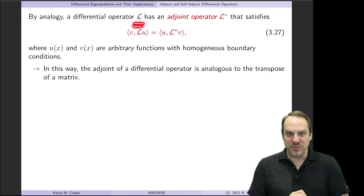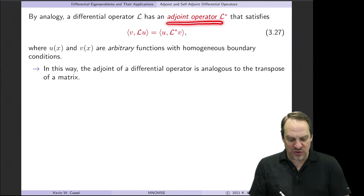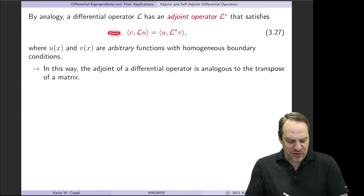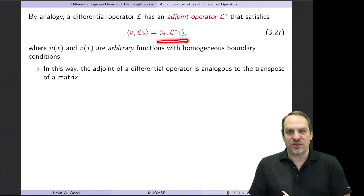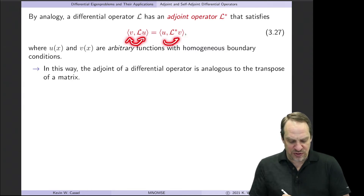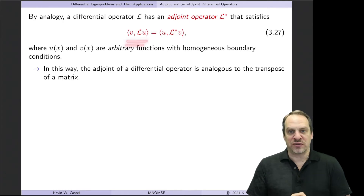By analogy, we define the adjoint operator L* for a differential operator L such that the inner product of v with L·u equals the inner product of u with L*·v. On the left, u is being operated on by the differential operator; on the right, it's v. Inner products of functions are integrals over the corresponding domain with respect to a weight function, as we'll see.